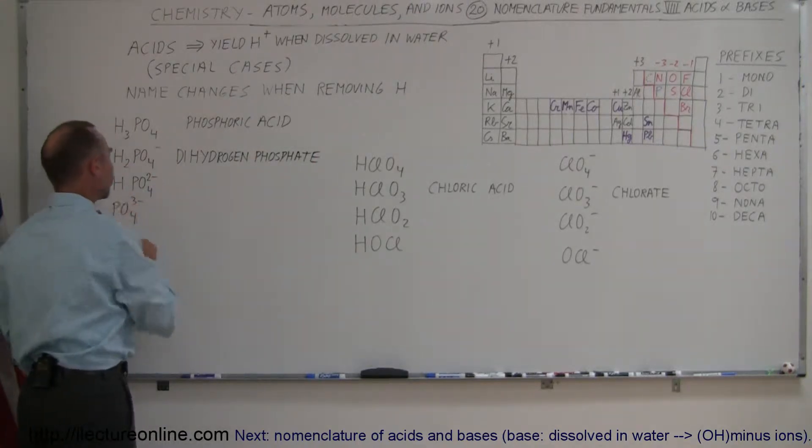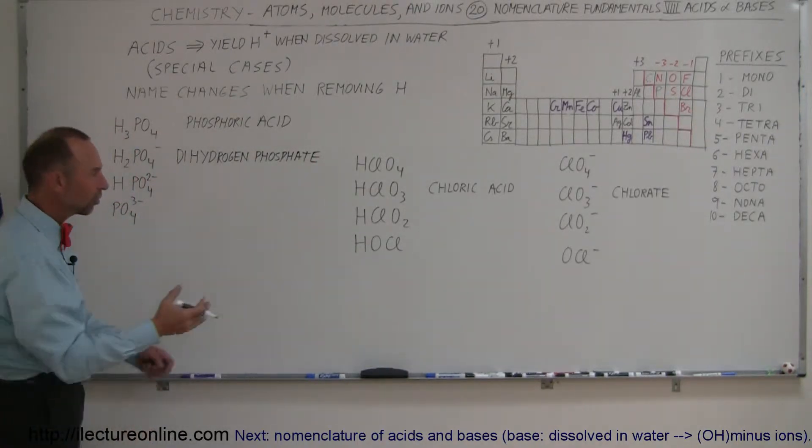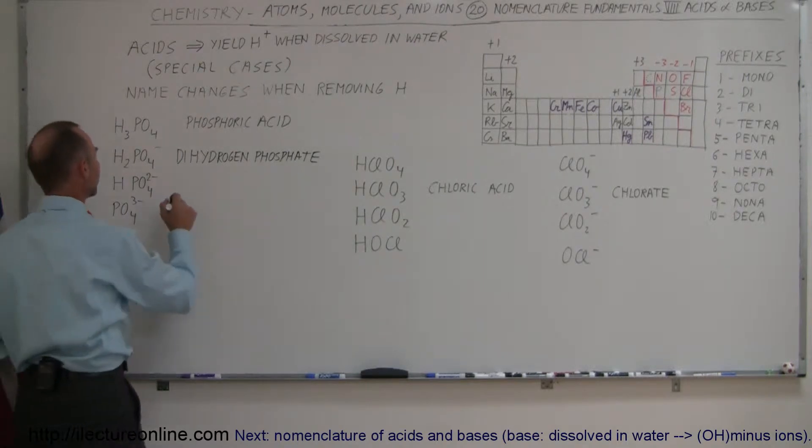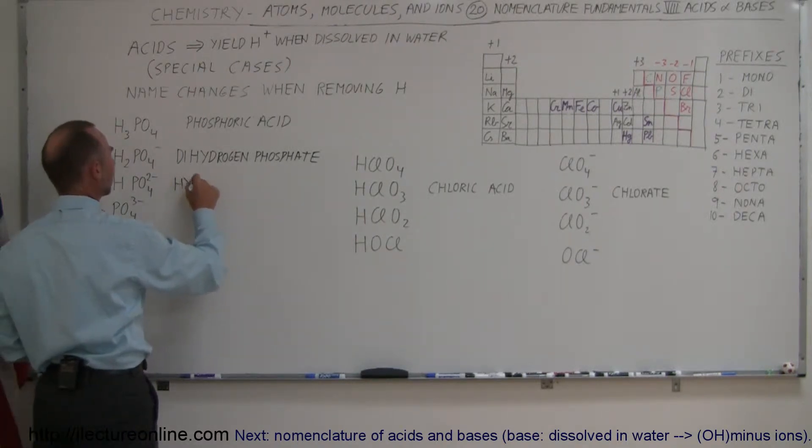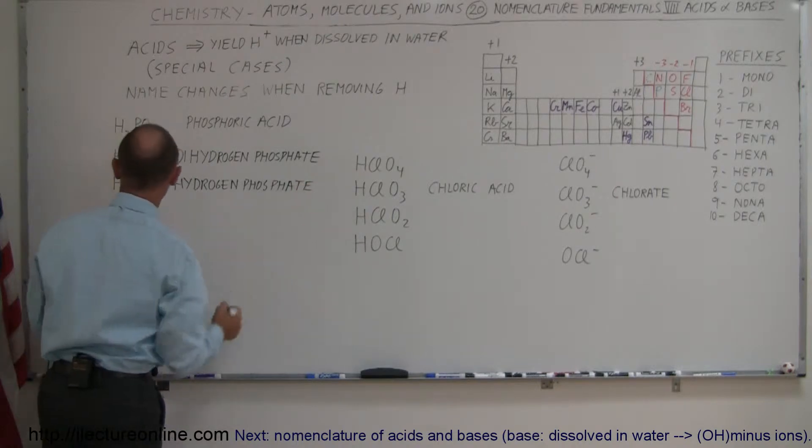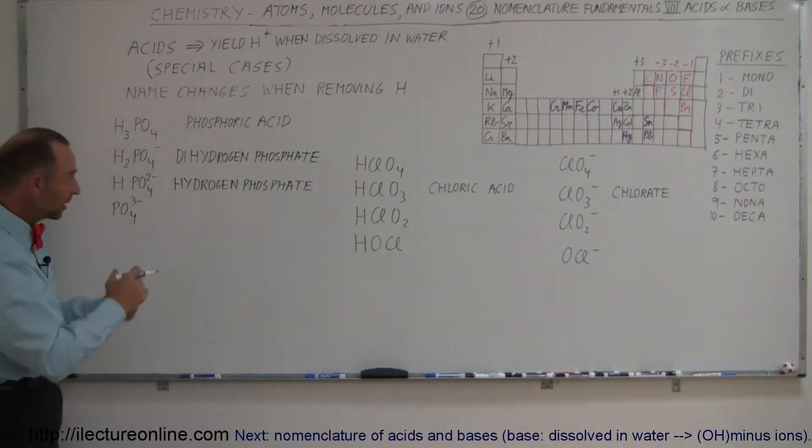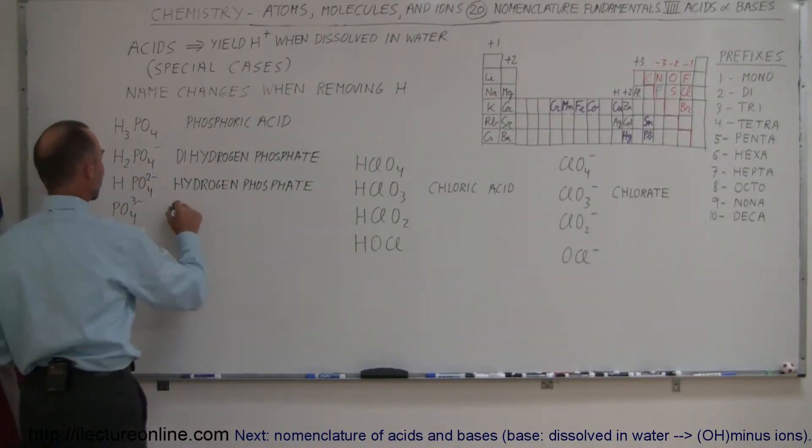And here we have a single hydrogen. So we could call that mono, but they just decided not to add the mono there. They simply say hydrogen phosphate ion. And then here we have an ion that doesn't have any hydrogen at all, so they just drop the name hydrogen and simply call this the phosphate ion.